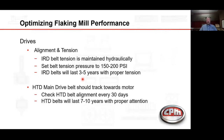For the drives, we look at alignment and tension. The inner roll drive belt tension is maintained hydraulically — we set the belt tension to 150 to 200 PSI on the control console. The inner roll drive belts will typically last 3 to 5 years with proper tension. The high-torque main drive belt should track towards the motor side, which is easier on the motor bearings. We need to check drive belt alignment every 30 days, and drive belts typically last 7 to 10 years with proper care.